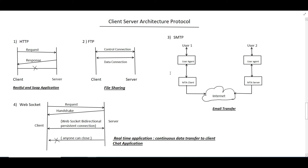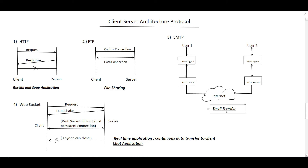The third protocol is SMTP — Simple Mail Transfer Protocol. If user 1 wants to send a mail to user 2, first user 1 sends the mail to the user agent, which transfers it to the MTA (Mail Transfer Agent) on the client side. The client-side MTA sends it to the server-side MTA, which then transfers it to the user agent on the receiving side. That agent delivers the mail to user 2 via POP3 or IMAP. SMTP is used for email transfer.